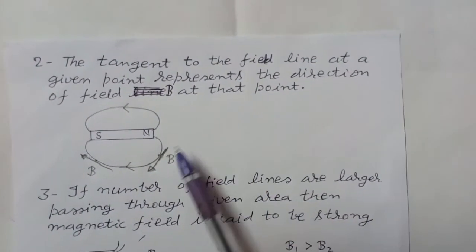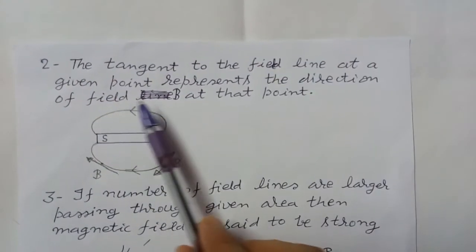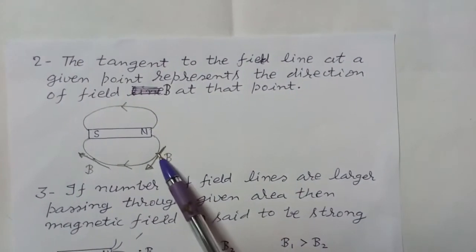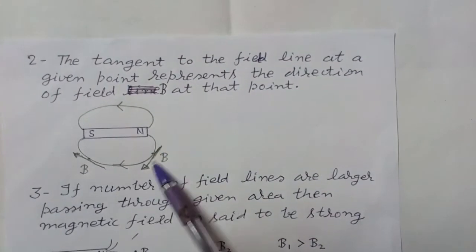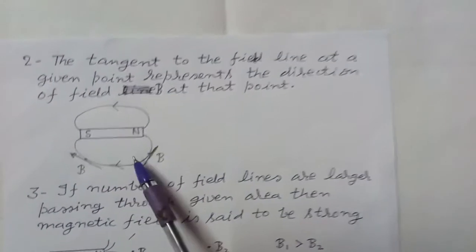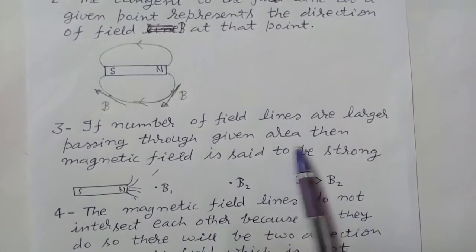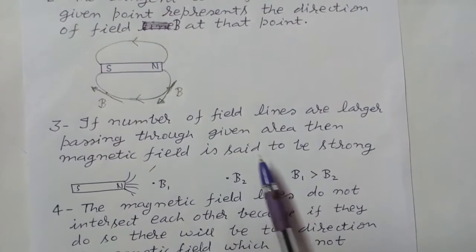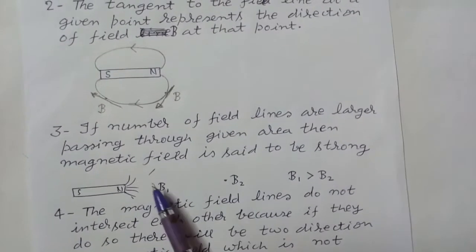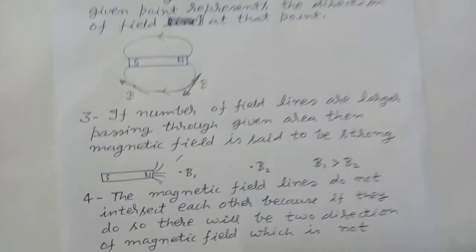If you want to know the direction of magnetic field at any point, we draw a tangent. The tangent to the field line at a given point represents the direction of field B at that point. Also, if the number of field lines passing through a given area is larger, the magnetic field is said to be strong. So near a magnet the magnetic field is strong, and farther away it is weak, because the number of field lines passing through a given area is more near the magnet. So B1 is greater than B2.